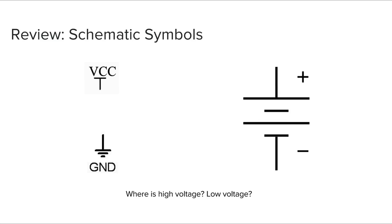Let's do a quick overview of the schematic symbols. On this side we have a battery, and over here we have two different things — one's called VCC and one's called ground. You've noticed in Project 2 that we used the two icons on the left side, which might have been a little bit less familiar. Both the top VCC and the positive side of the battery are your high voltages, and the ground and the negative side of the battery are low voltages.